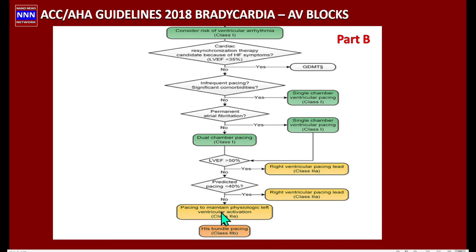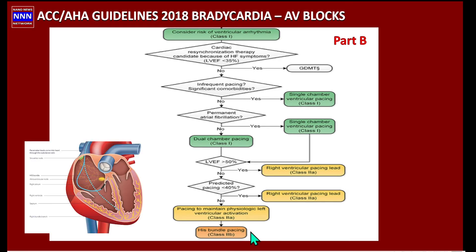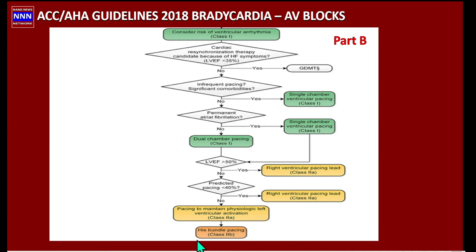To maintain physiologic left ventricular activation, there are two approaches: CRT, or more recently, His bundle pacing, which is being used by EP experts. His bundle pacing activates the His bundle just before the origin of the right and left bundle branches, thereby activating both ventricles simultaneously and achieving synchrony during contraction. These patients function much like CRT patients. The technique is more challenging, but in expert hands it has been found quite useful with significant improvement in cardiac output.